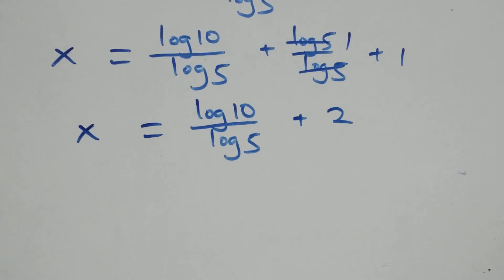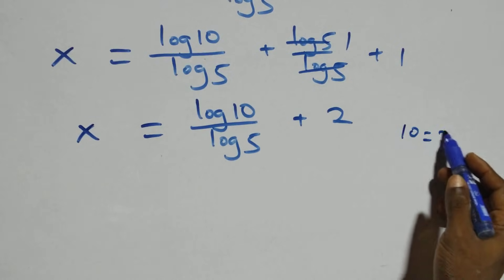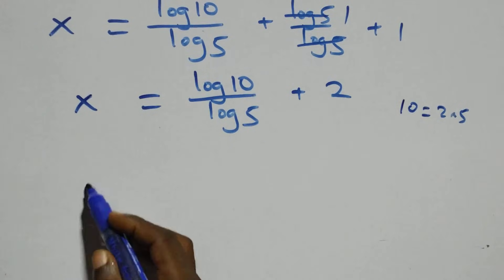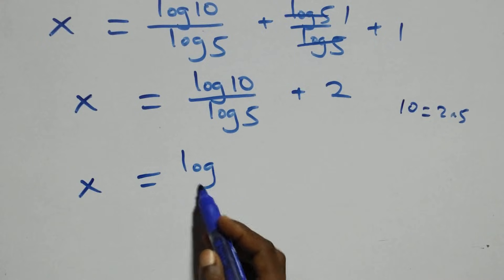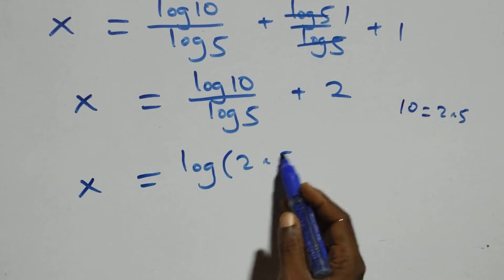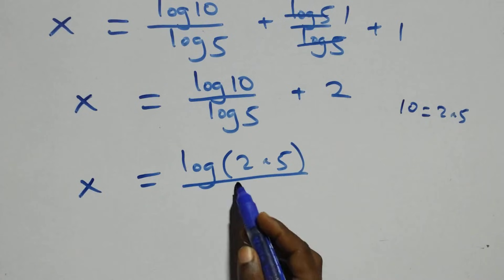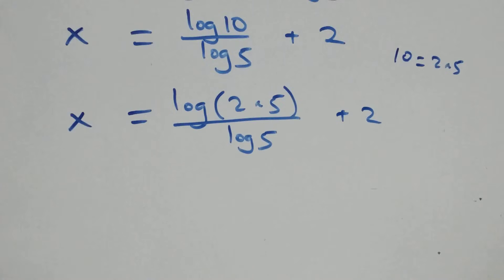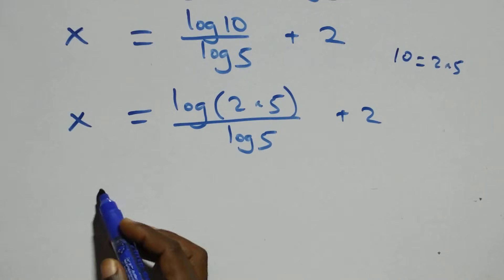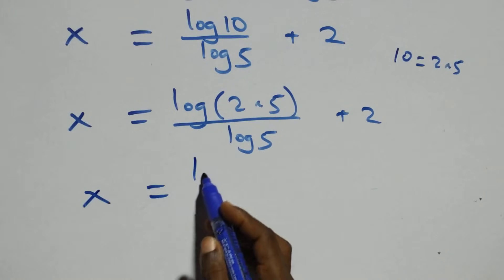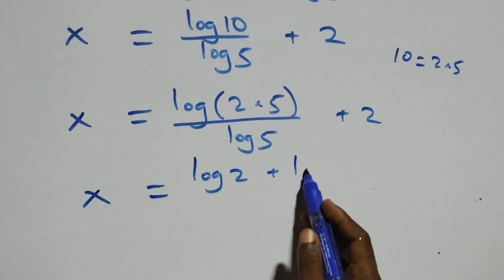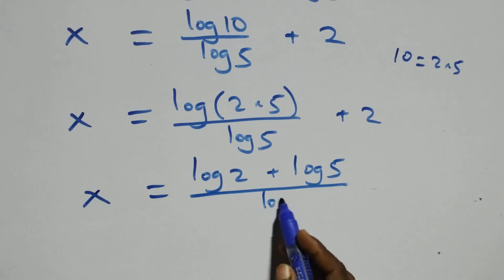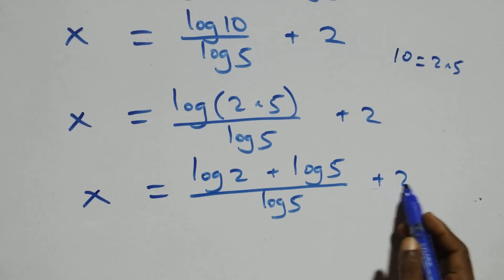Next, we write 10 as 2 times 5. So x equals log(2 times 5) over log 5 plus 2. This follows the law of logarithms, giving x equals log 2 plus log 5, all over log 5, plus 2.